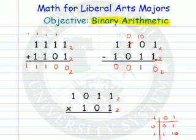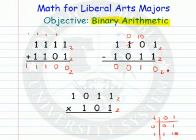You want to check and make sure you're right if you're a little nervous about it. We'll add to check it. 0 plus 1 is 1. 1 plus 1 is 10 — that's a 0. Carry your 1. 1 plus 0 plus 0 is 1. And then 0 plus 1 is 1. So it checks out for us.